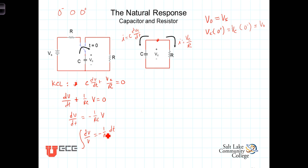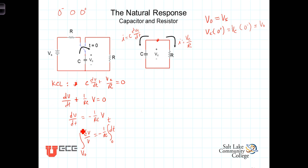We're going to integrate dt from t equals 0 up to the upper limit of integration, which will just be our variable t. The integration on the left-hand side will use the corresponding voltages: the lower limit will be the voltage at t equals 0, which we're going to call V0, and the upper limit will be V of t — the function we are solving for.